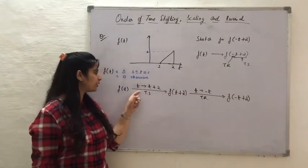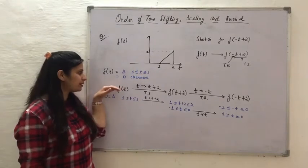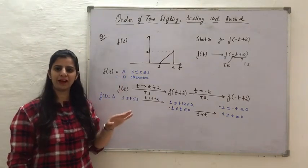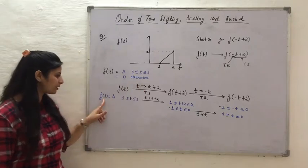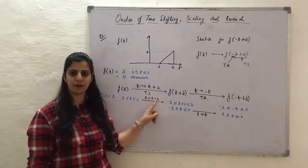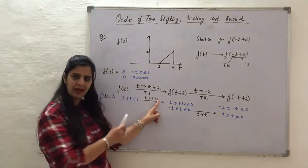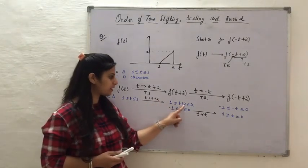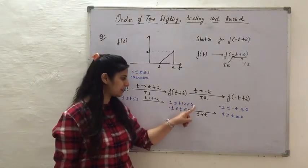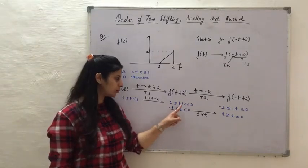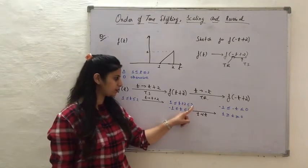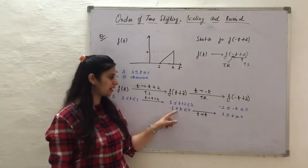Now let us apply these operations on the time axis. I apply the change only where the function is present, leaving out where the function is 0. The function is present between 1 and 2. Applying time shifting where t transforms to t+2, I substitute t+2 in place of t. Taking the 2 to the other sides gives minus 2: so -2+1 = -1 and -2+2 = 0. That is the result of time shifting.